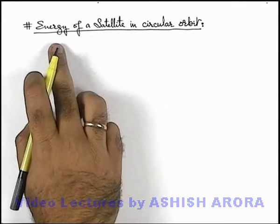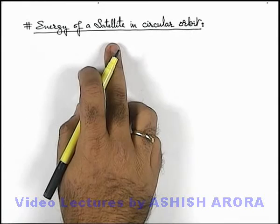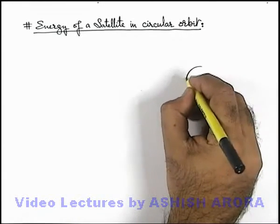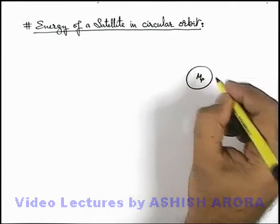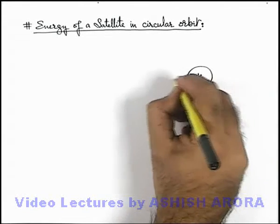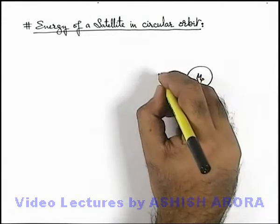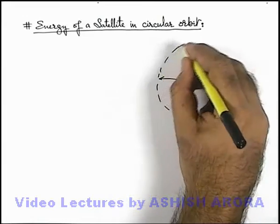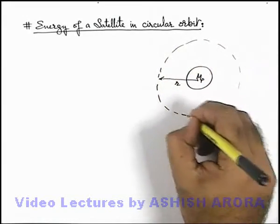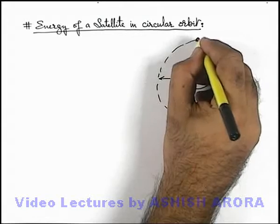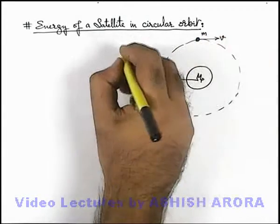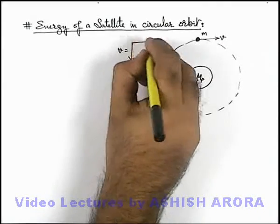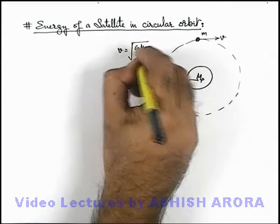Let's study the energy of a satellite in circular orbit. Say we are given a planet of mass Mp and a satellite revolving around the planet in a circular orbit of radius r. In this situation, we already know that the orbital speed v can be given as √(GMp/r).